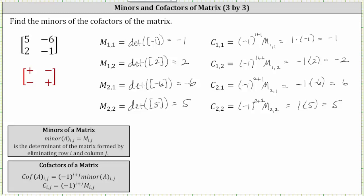Before we go, I do want to mention: if we take a look at the powers of negative one, we should be able to recognize that when the exponent is even, the result is positive one, and when the exponent is odd, the result is negative one. Sometimes you'll see this represented in the form of a matrix, as we see here on the left in red — or if the sum of the row and column is even, the result is positive one, and if the sum of the row and column is odd, the result is negative one, represented by the negative. I hope you found this helpful.